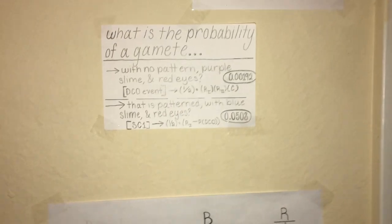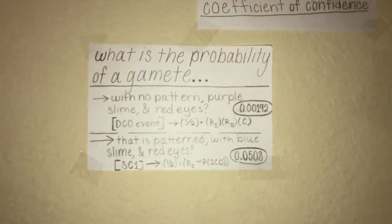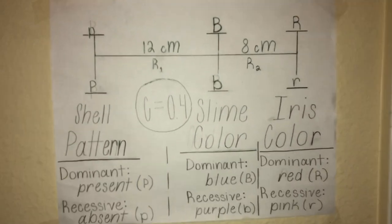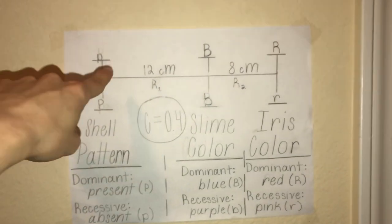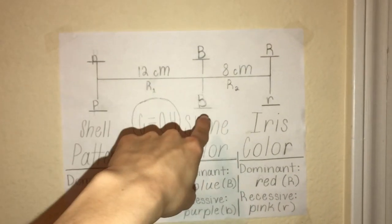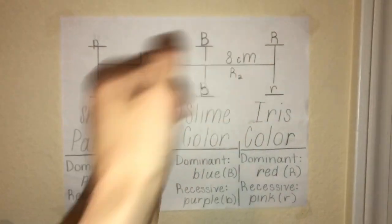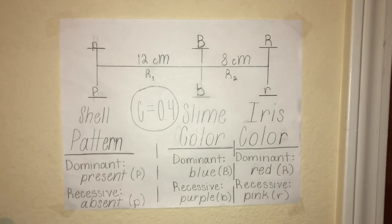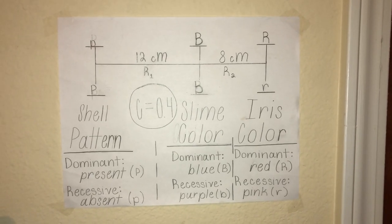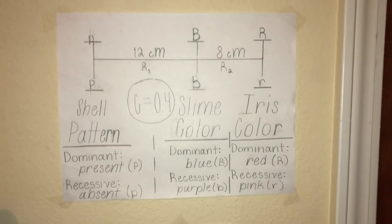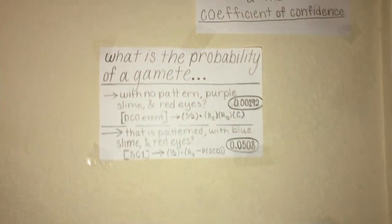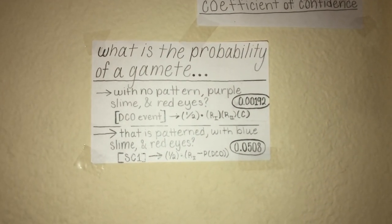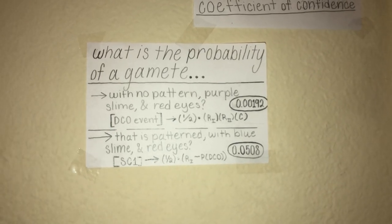So what is the probability of a gamete with no pattern, purple slime, and red eyes? Looking at our genetic map, we can see that this combination is going to be a double crossover event because it crosses our R1 and our R2 region. We will calculate one-half times the probability of the DCO event, which is R1 times R2 times C.